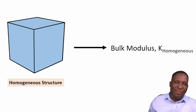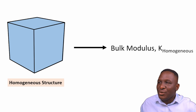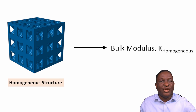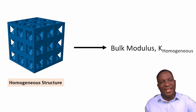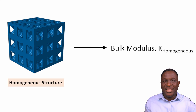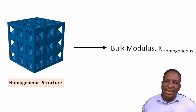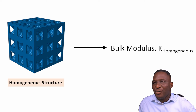I decided to change the problem by investigating a homogeneous structure, which doesn't have the complexities of a lattice structure. With a homogeneous structure we can easily calculate its bulk modulus analytically, and then see whether that analytically determined bulk modulus matches the numerically determined one. We want to find k-homogeneous numerical and verify it matches the analytical formulation.